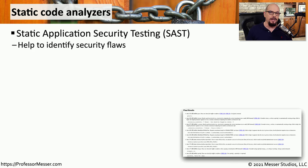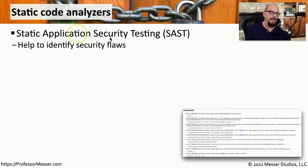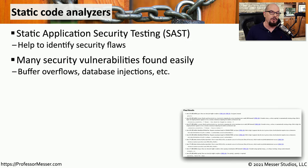When an application developer writes software, there might be a hidden vulnerability inside the code that no one has found yet. It's very difficult for human beings to sift through hundreds or thousands of lines of code to identify where those vulnerabilities might be. So instead, we can automate the process with static application security testing, or SAST. We can use static code analyzers to go through the source code and identify places where there may be vulnerabilities such as buffer overflows, database injections, or other well-known types of attacks.